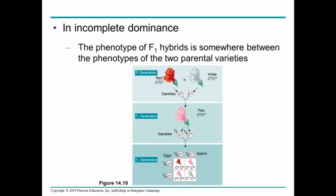Incomplete dominance is when one allele is not totally dominant over the other, and you see them merging together — you see a little bit of the recessive showing through the dominant — such as in a red and white carnation. When you cross them together, you get pink, which is the blending of the red and white flowers.